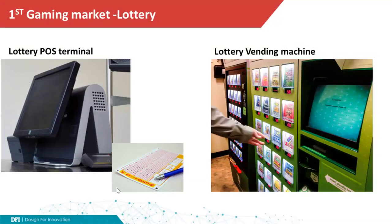We start with the first gaming market, the lottery. The two major gaming terminals for the lottery market are the post machine and the second one is the self-help kiosk, also called the lottery vending machine.